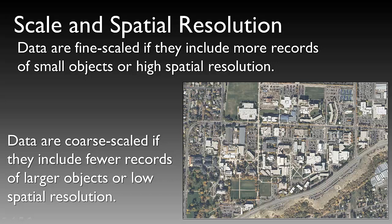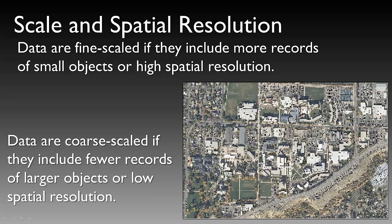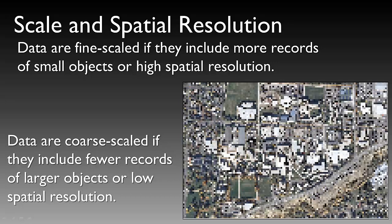Moving from fine-scaled to coarse-scaled data, starting with USU Logan main campus at about a half-meter pixel resolution. Moving through slides, you can start to see pixel resolution changing visibly. We begin to lose fine detail as data becomes more coarsely scaled. At a 10-meter pixel value, we lose definition of buildings and roads, though we can still make out some detail necessary to interpret the image.